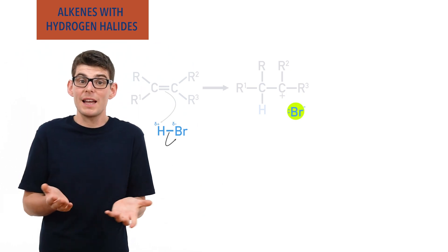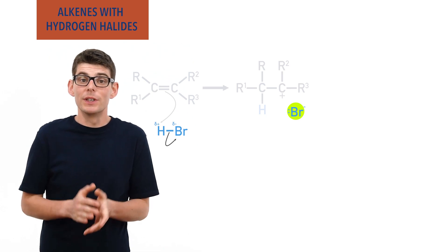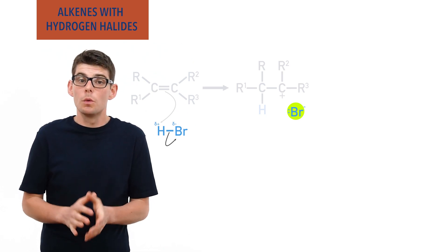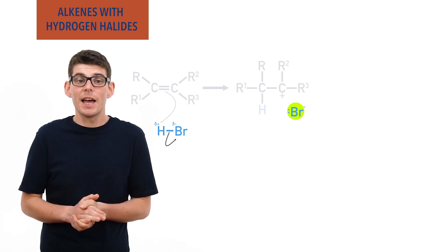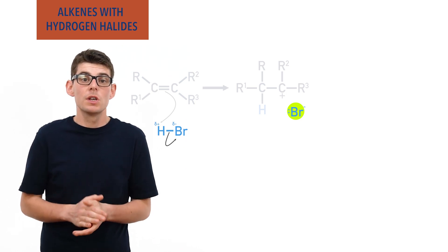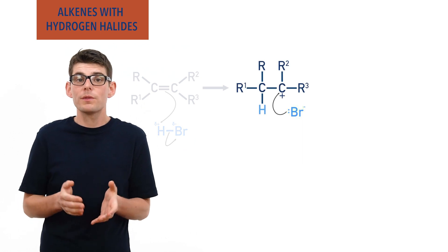The reaction now just proceeds as expected. The negatively charged halide ion will get attracted to the positively charged carbon in the intermediate and use its new lone pair of electrons to form a bond to it, forming the final product.